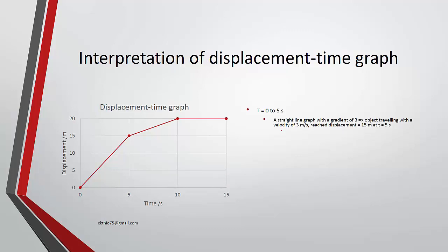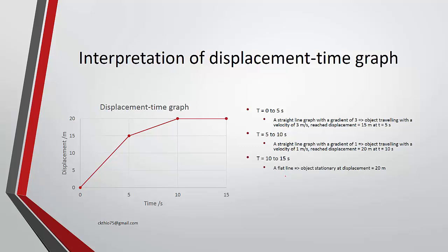From 0 to 5, it is a straight-line graph. The gradient is 15 divided by 5, so the object is moving at 3 meters per second and reaches a displacement of 15 meters after 5 seconds. From 5 to 10, the gradient is 1, moving 5 meters over 5 seconds, giving a velocity of 1 meter per second, reaching 20 meters at t equals 10 seconds. The last part is a flat line, meaning the object is stationary at 20 meters.